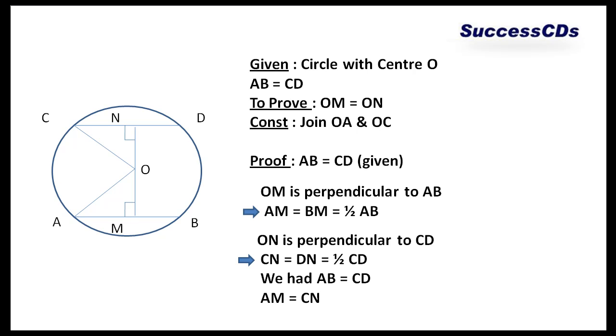Same way, similarly, ON is perpendicular to CD. Therefore, CN and DN will be equal to each other which in turn is equal to half of CD. Now we had AB is equal to CD.